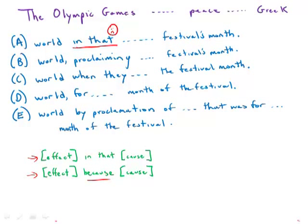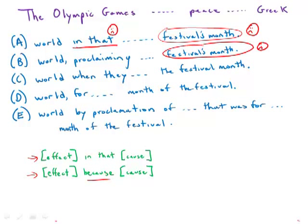Choice A also has the awkward phrase 'festivals month,' so we're not particularly happy with A right now. Choice B also has this odd 'festivals month,' and also has the odd adjective 'proclaiming' — it's really unclear who exactly is proclaiming. It's a modifier, but it's not modifying the word it's touching. 'Greek world proclaiming' doesn't really work, so we eliminate B.